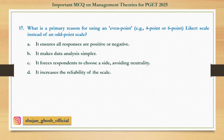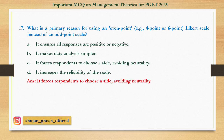Question number 17: What is the primary reason for using an even-point Likert scale instead of an odd-point scale? Option A: It ensures all responses are positive or negative. B: It makes data analysis simpler. C: It forces respondents to choose a side, avoiding neutrality. D: It increases the reliability of the scale. Answer is: It forces respondents to choose a side, avoiding neutrality.